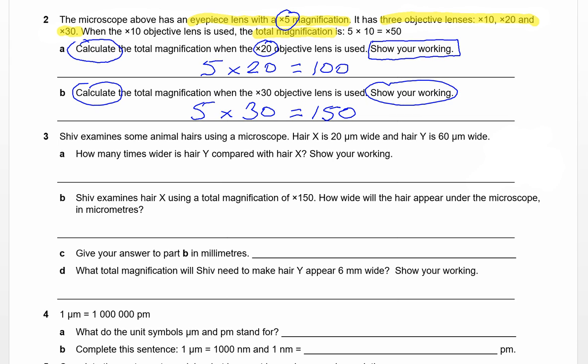Let's have a look at question three. Shiv examines some animal hairs using a microscope. Hair X is 20 microns wide, Hair Y is 60 microns wide. We've got this weird-looking unit of measurement here. This is the symbol for a micron or micro, a prefix to our unit of measurement. It's a micrometer, which can also be pronounced micron. You've got 20 micrometers and a hair which is 60 micrometers wide. A micron is one millionth of a meter, which is the same as one thousandth of a millimeter.